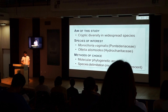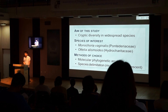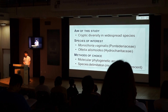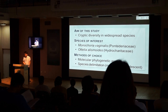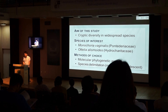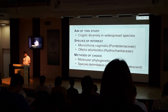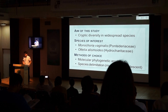To summarize the introduction: the aim of this study is to investigate cryptic diversity in widespread species. We have two species of interest — Monochoria vaginalis of Commelinales and Ottelia alismoides of Hydrocharitaceae. The method of choice is DNA barcoding combined with second-stage analyses.